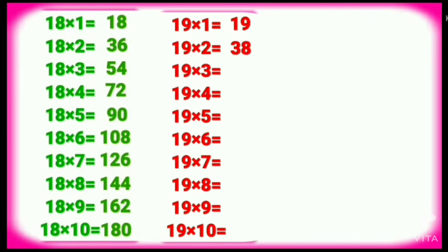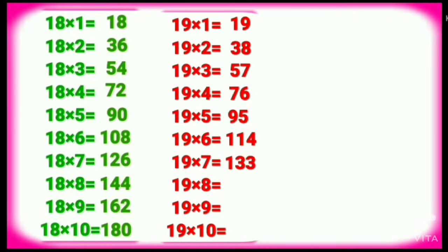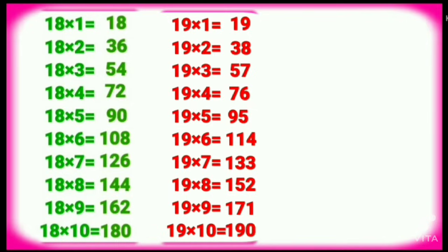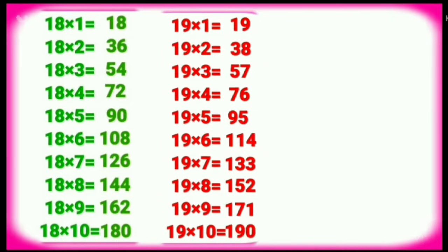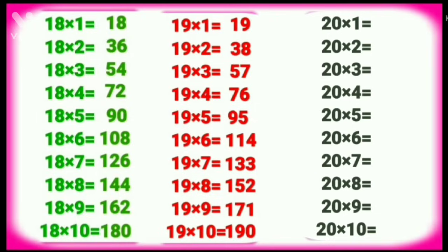Nineteen threes are fifty-seven. Nineteen fours are seventy-six. Nineteen fives are ninety-five. Nineteen sixes are one fourteen. Nineteen sevens are one thirty-three. Nineteen eights are one fifty-two. Nineteen nines are one seventy-one. Nineteen tens are one ninety. Table of Twenty.